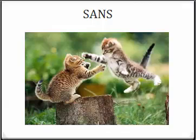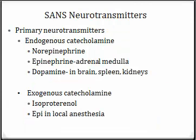Hello students, today we'll be talking about the second half of the autonomic nervous system known as the SANS, or sympathetic autonomic nervous system. The primary neurotransmitter used in the SANS is norepinephrine.